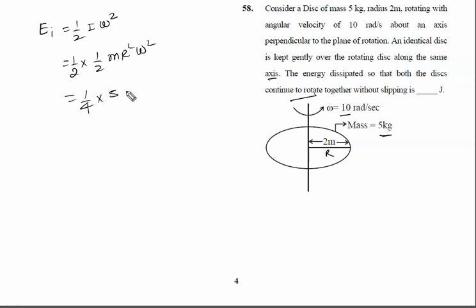Mass is 5 kg, radius is 2 square that is 4, omega is 10 square that is 100. So initial energy is 500 joules.